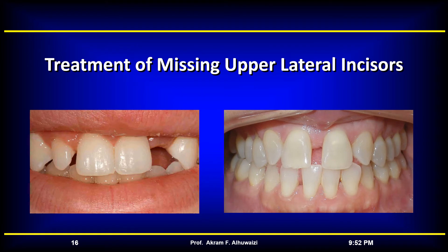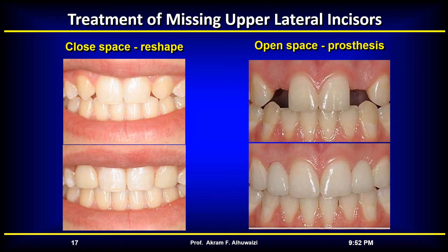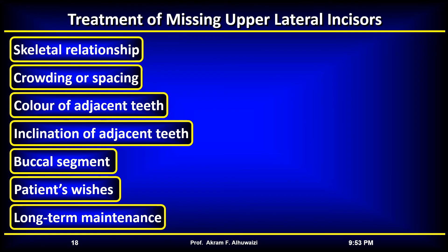For treatment of missing upper lateral incisors, there are two treatment options: closure of the space by camouflaging the canines — grinding the cusps, flattening the labial surfaces, and adding composite when needed — or opening the space and placement of a fixed or removable prosthesis. The choice for a particular patient will depend on a number of factors.